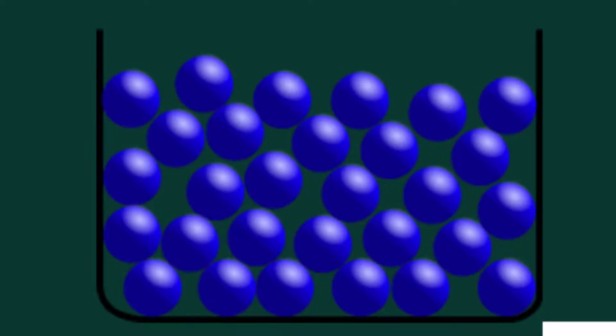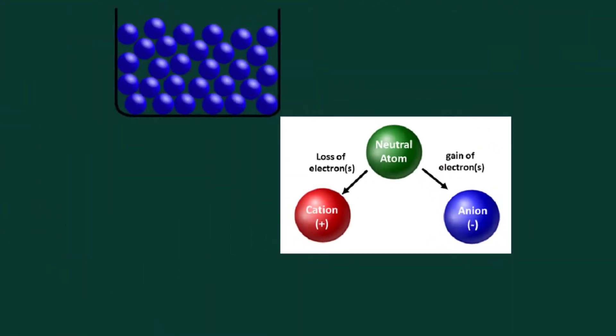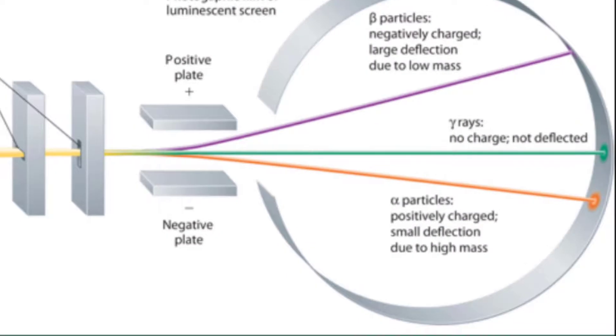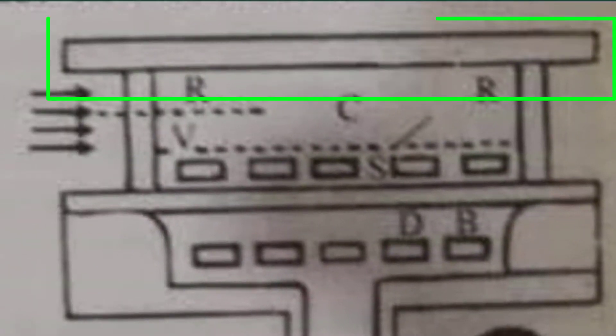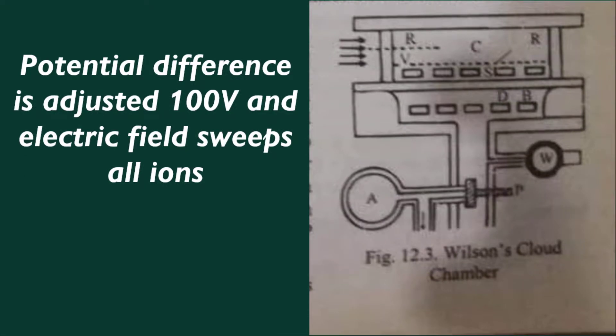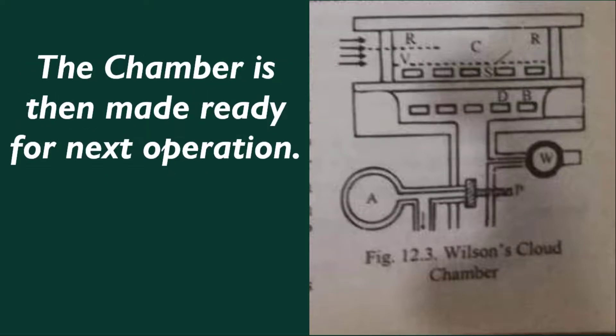The water droplets are condensed on charged ions. The chamber C is illuminated and tracks can be viewed through the top glass plate and photographed. After that, a potential difference is adjusted to 100V so that the electric field can sweep all the ions from the chamber C, so that the chamber is then made ready for next operation.